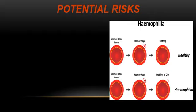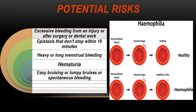In most cases, patients with hereditary coagulopathies know their problem and will tell you about it. However, you can also identify bleeding risk from the patient history: previous excessive bleeding from injury, surgery, or dental work; epistaxis that does not stop within 10 minutes; heavy or long menstrual bleeding in female patients; hematuria or blood in stool; easy bruising, lump bruises, or spontaneous bleeding. All such risks may lead to persistent post-operative bleeding, so always request a full clotting profile before any elective surgery.